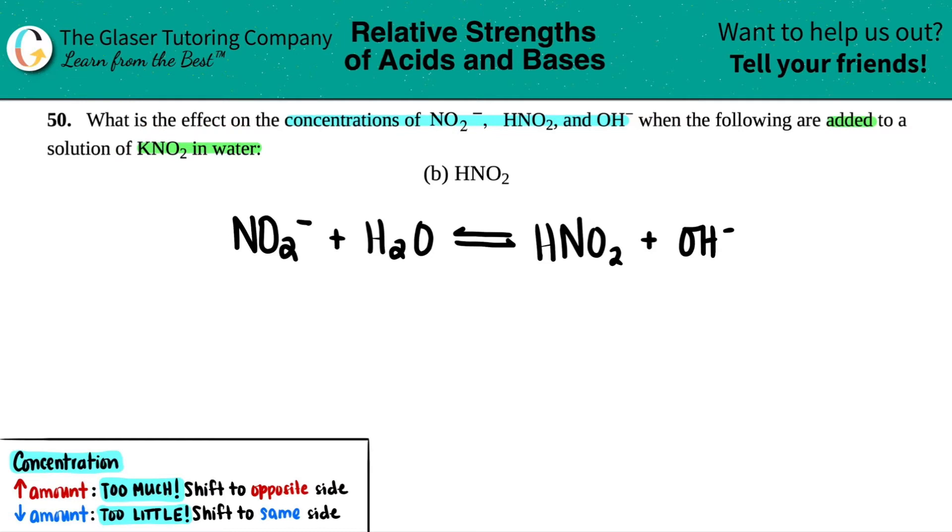We wrote the balanced equation in letter A of this example, so if you want to figure out why this is the correct balanced equation, you could always go back to 50A just to see it if you guys are on the playlist. So all we're going to do is we're just going to go straight for this. In this case, all of these are in the balanced equation. We just want to figure out what's going to happen to NO2 minus, HNO2, and OH minus. So what I'm going to do is I'm just going to write them over here to start off with.